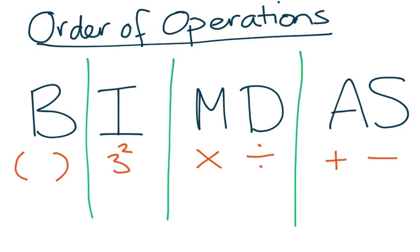Brackets are by themselves, the indices are by themselves, but then multiplication and division are together and that's because they're interchangeable, the order of them.